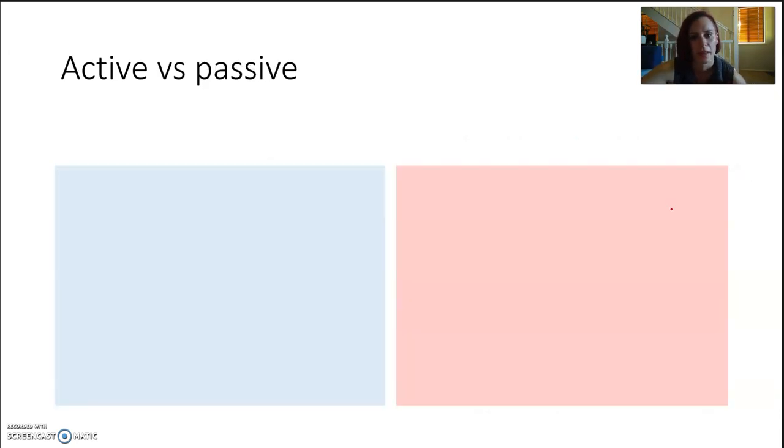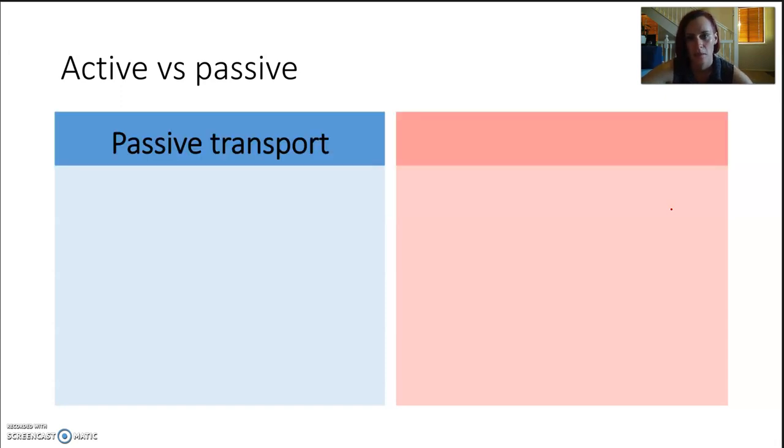There's different types of transport methods that get things across the membrane. Passive transport versus active transport. And passive transport means it's just happening. Active transport requires some energy.